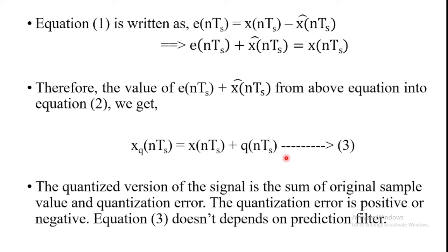In this equation, the quantized version of the signal is the sum of the original sample value and the quantization error, which can be positive or negative. This equation does not depend on the prediction filter. This is the working principle and transmitter of the DPCM system.